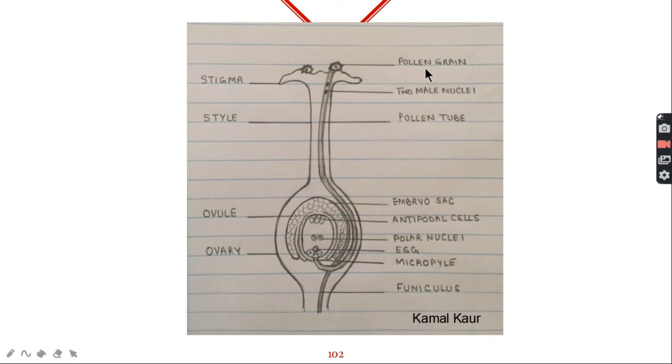So this is the pollen grain and this is the pollen tube. Inside the pollen tube there are two male nuclei. Embryo sac then antipodal cells, two polar nuclei, one egg. This tiny pore micropyle and this stalk like structure is the funiculus. I am sure you could draw the diagram well.